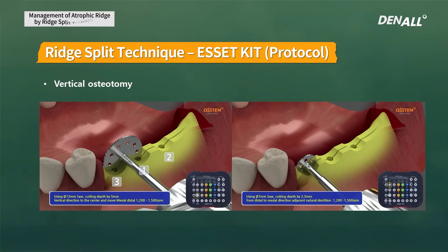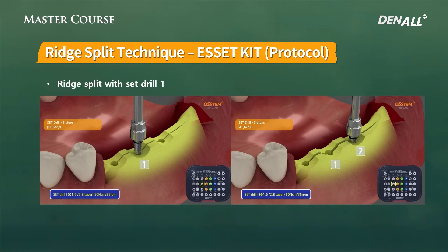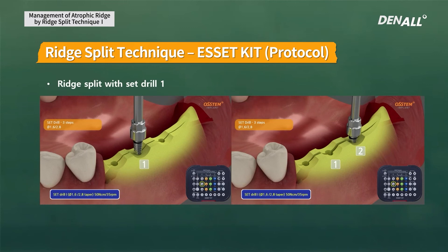In the proximal area closest to adjacent teeth, use the smallest saw (7 mm) and perform the osteotomy most shallowly. For full-depth osteotomy, start from the center and move to the distal area — never use a large saw in the proximal area close to adjacent teeth. Set drills are used in a defined order: always start in the middle, then the distal area, then the proximal area.